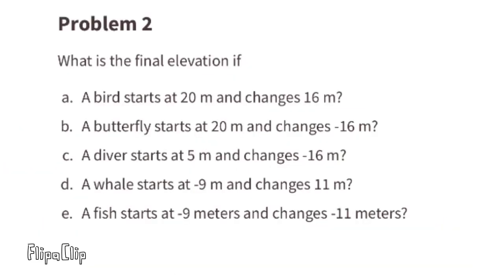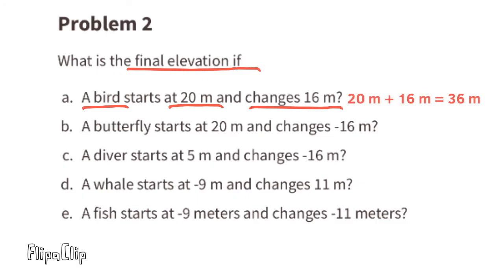Problem number two: What is the final elevation? Part A: a bird starts at 20 meters and changes 16 meters. We can write this as 20 meters plus 16 meters equals a total of 36 meters. So the elevation of the bird would be 36 meters.